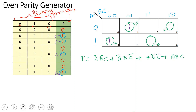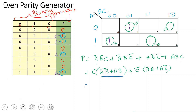So, looking at the first and fourth terms, C is common: C times (A-bar B-bar plus A B). The second and third terms have C-bar common: C-bar times (A-bar B plus A B-bar). Now, if we look at this expression, A-bar B-bar plus A B is an XNOR expression. Plus C-bar times (A-bar B plus A B-bar) is an XOR expression.